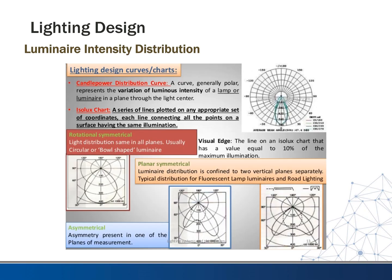Luminaire intensity distribution curves can be obtained from manufacturers and they basically show how the light is going to be projected from the fixture. These can help when spacing fixtures — knowing how far apart to space them — or if you're trying to light something like a wall wash, what angles you need to position the light fixture at.